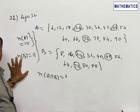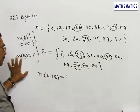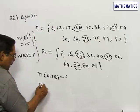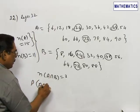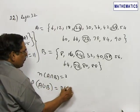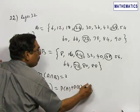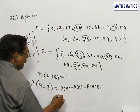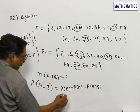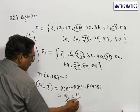Now the total number of numbers which are divisible either by 6 or 8 will be A union B. If I want to take the probability, the probability will be P of A plus P of B minus P of A intersection B. The probability here will be 15 by 90 plus 11 by 90 minus 3 by 90.